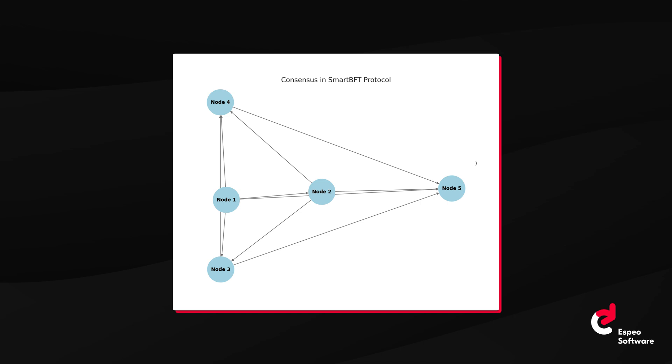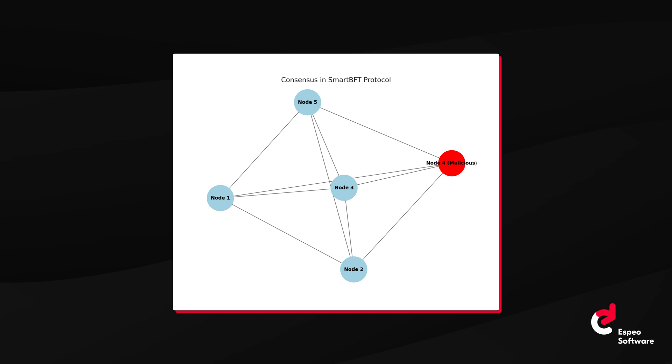To address these challenges, Hypergear Fabric 3.0 introduces the Smart BFT consensus protocol, a Byzantine fault-tolerant mechanism. Smart BFT is designed to handle not just crashes and network failures, but also malicious nodes that may provide false or conflicting information. It can tolerate up to a third of the nodes acting badly. Unlike RAFT's leader-based system, Smart BFT doesn't rely on a single leader in the same way, which reduces risks associated with leader failure or compromise. All non-faulty nodes work together to agree on the order of transactions and ensure consistency across the ledger. The protocol uses cryptographic techniques and validation steps to prevent malicious actors from disrupting the consensus process. Smart BFT can operate effectively even in asynchronous networks, where message delays are hard to predict.